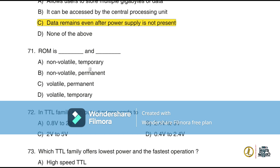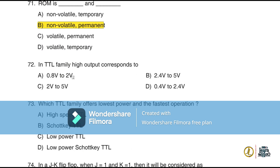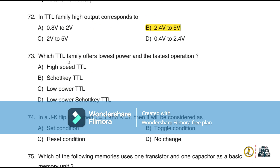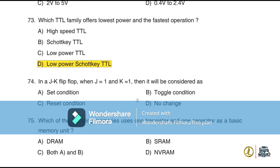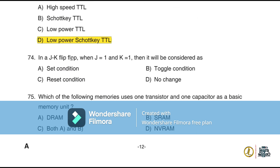Question 71: ROM is non-volatile and permanent. Question 72: In a TTL family, high output corresponds to 2.4 V to 5 V. Question 73: The TTL family that offers lowest power and fastest operation is Low Power Schottky TTL. Question 74: In a JK flip-flop, when J = 1 and K = 1, the operation performed is toggle.